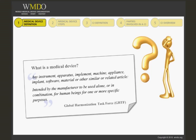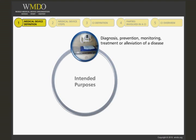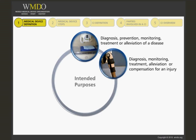implant, software, material, or other similar or related article — note that this covers a pretty broad area — intended by the manufacturer to be used alone or in combination with other products, and specifically designed for human beings for one or more specific purposes. The purposes specified by the manufacturer may be diagnosis, prevention, monitoring, treatment, or alleviation of a disease.